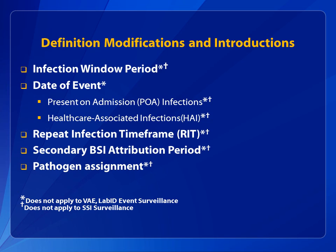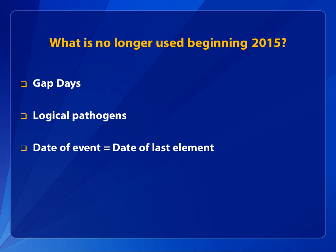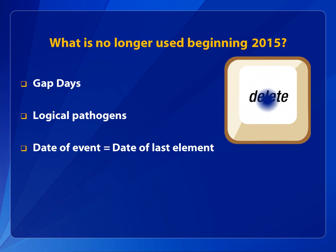Note these definitions and rules do not apply when conducting ventilator-associated event and lab ID event surveillance. With the exception of date of event, these definitions and rules also do not apply to surgical site infection surveillance. NHSN no longer uses gap days and logical pathogens when making HAI and POA infection determinations. Also, date of event is no longer the date when the last element of the NHSN definition occurs — it's the date when the first element occurs.